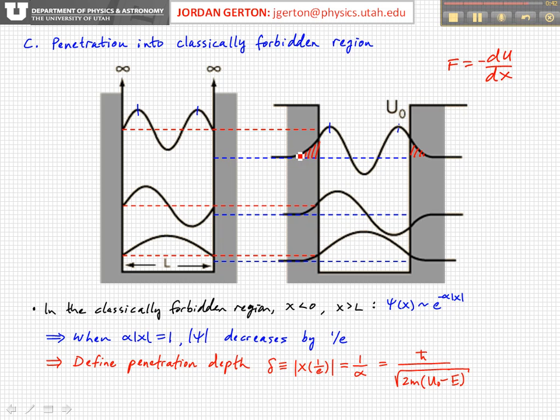It drops off more gradually. We can characterize that by the penetration depth. When X < 0 or X > L, outside of the well, ψ(X) is proportional to e^(-α|X|). When α|X| = 1, ψ decreases by a factor of 1/e. We define the penetration depth as delta = 1/α, which is expressed right here.